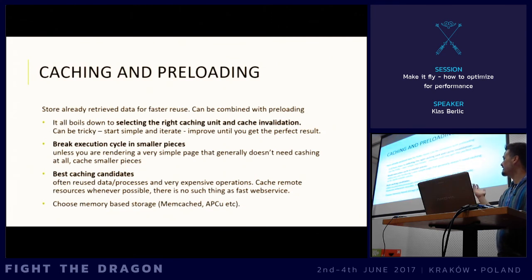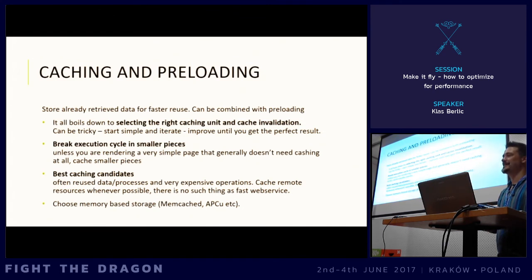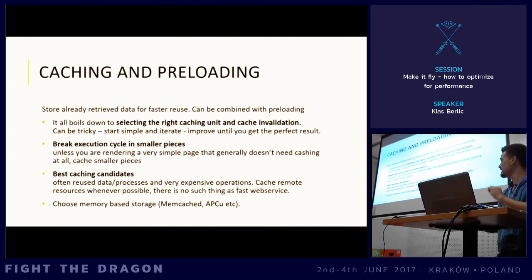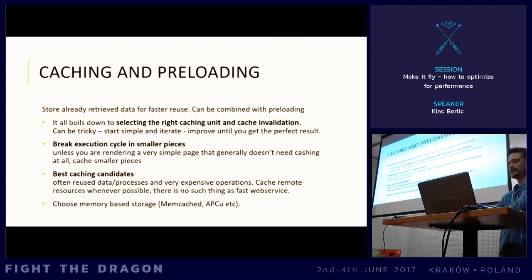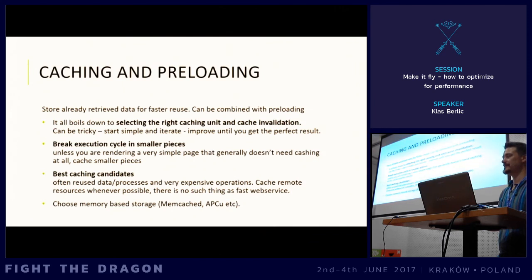Best caching candidates are often-reused data and processes, and very expensive operations. Cache remote resources whenever possible, because that is the slowest thing — there is no such thing as a fast web service compared to a local database; it can be 100 times slower due to network latency and server-side latency. Whenever you can, choose memory-based storage because it's much faster than disk. Even on small sites, a user gets information instantly — it could be a 1-to-10 ratio, like going from one second down to one-tenth of a second.